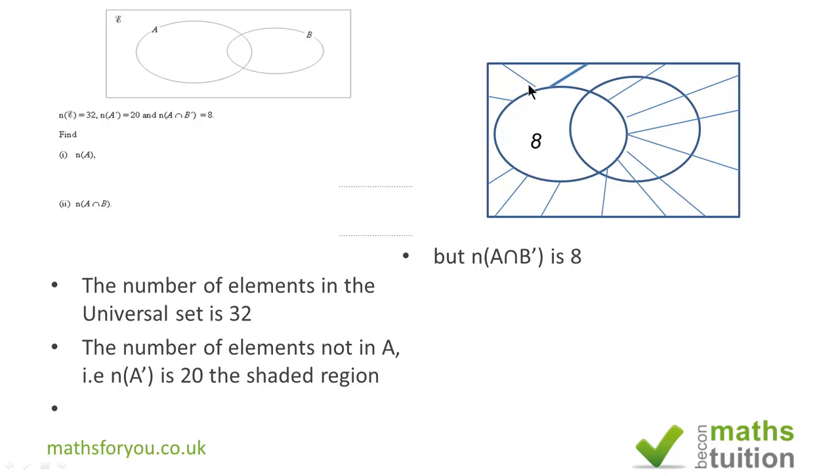So there are now 4 left, so the remaining 4 have got to be in A intersection B, hence 4 there. So A intersection B prime is 8 and then A intersection B is 4.